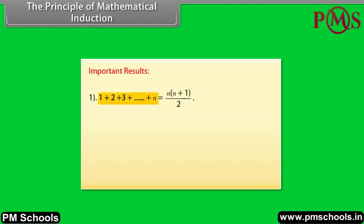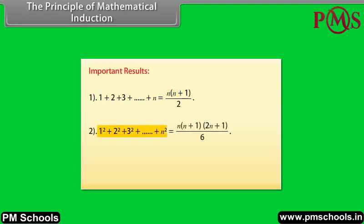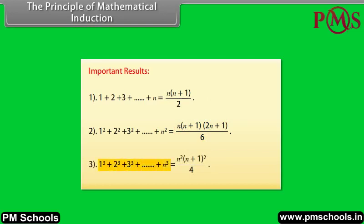Important results: 1 + 2 + 3 + … + n = n(n+1)/2. 1² + 2² + 3² + … + n² = n(n+1)(2n+1)/6. 1³ + 2³ + 3³ + … + n³ = n²(n+1)²/4.